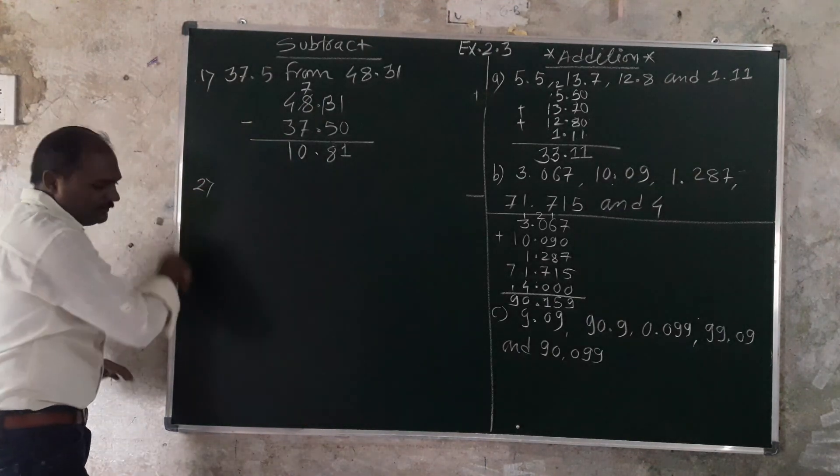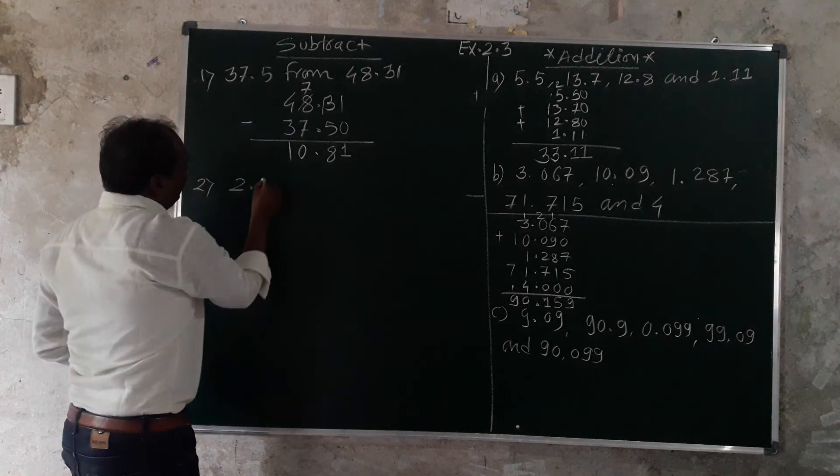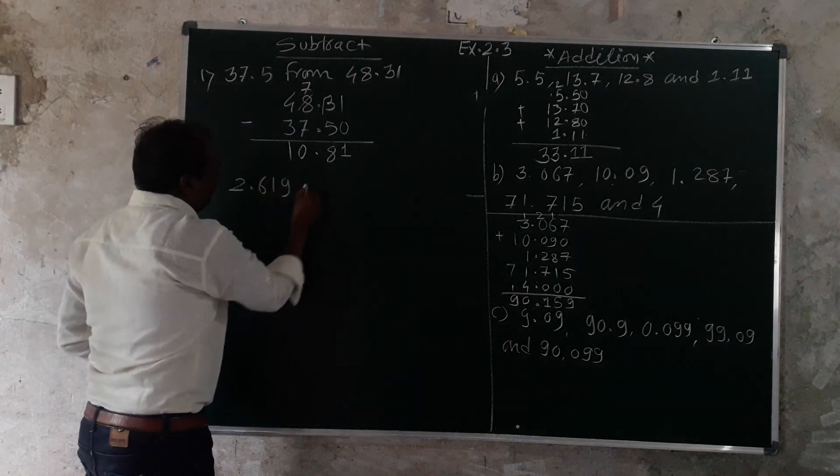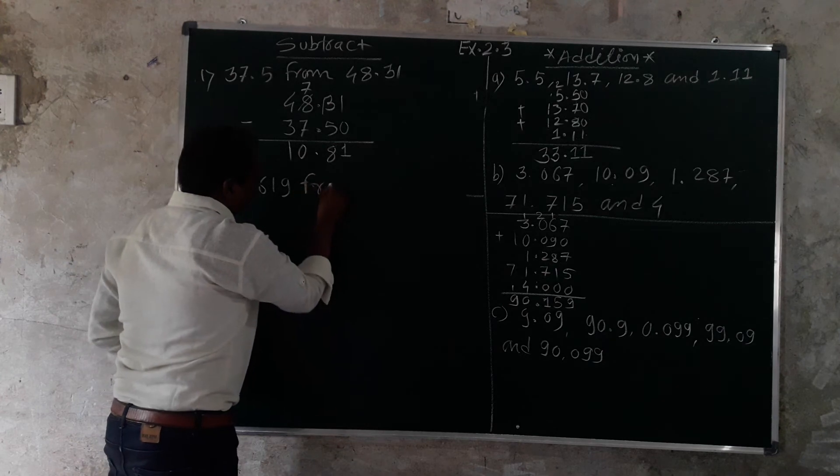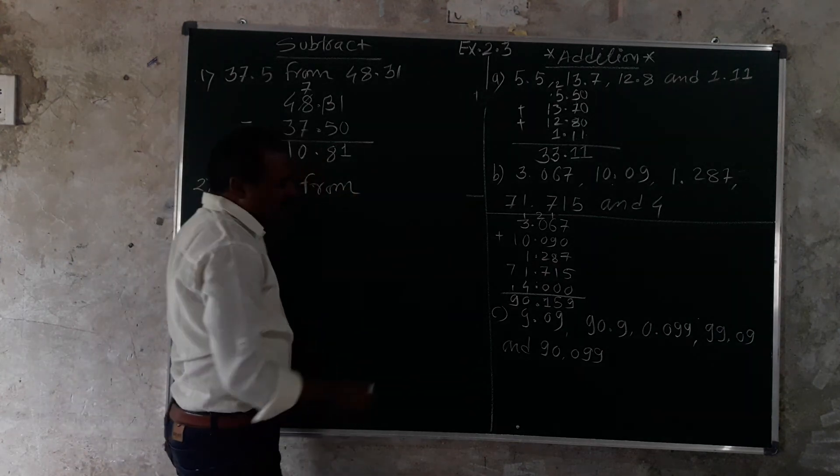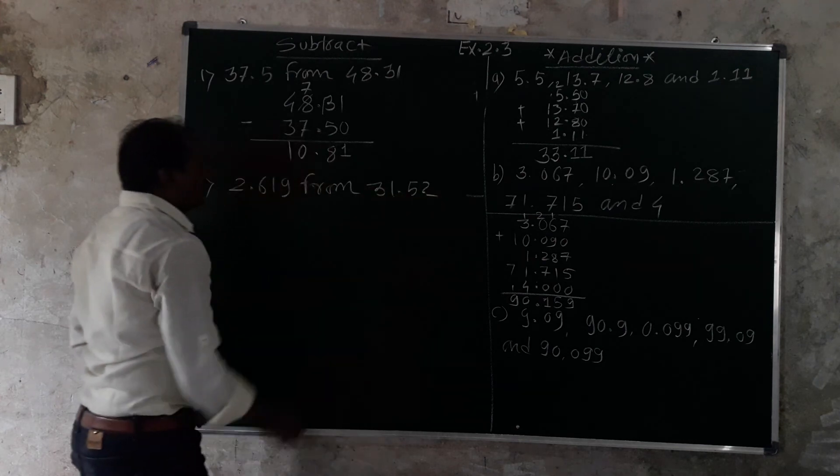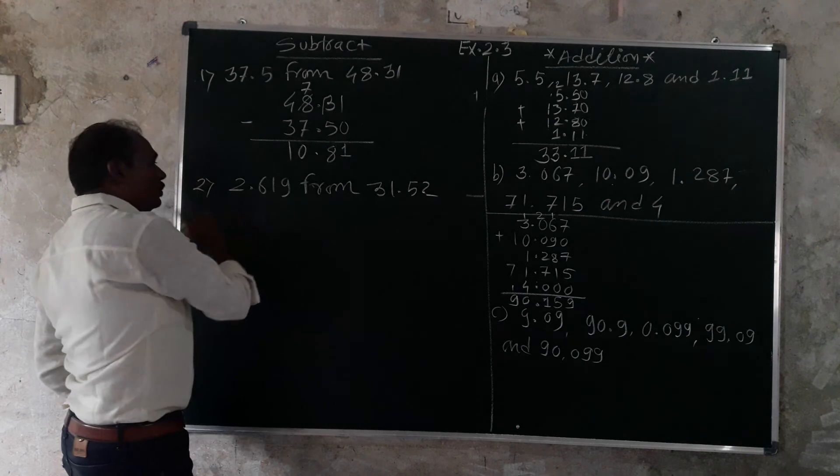Practice 2: Subtract 2.619 from 31.52. Write it as 31.52 minus 2.619.